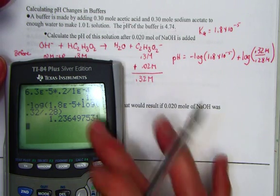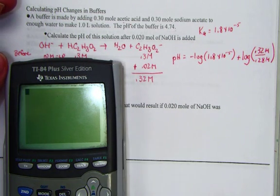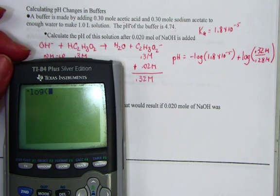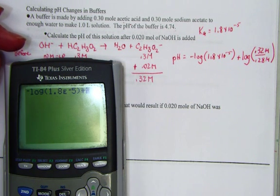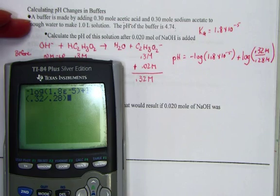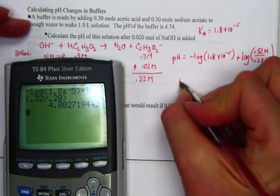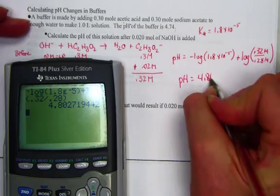Oh, I forgot to close my parenthesis. All right, let's try it again. Negative log 1.8 E negative 5, close my parenthesis, plus the log of the ratio of 0.32 divided by 0.28, close my parenthesis. And that makes better sense. The pH came out to be 4.80.